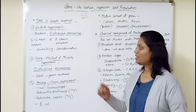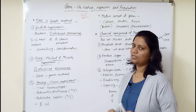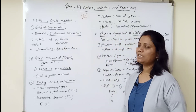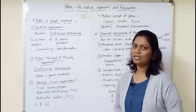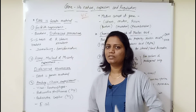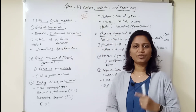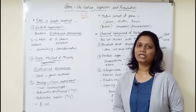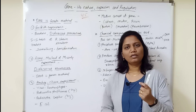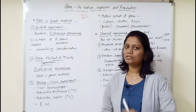Let me give you a little hint for this chapter so that you can easily get 4 to 5 marks. The first point is that DNA is a genetic material. In the chapter on genetic basis of inheritance, there is a scientific explanation, especially on inheritance points.